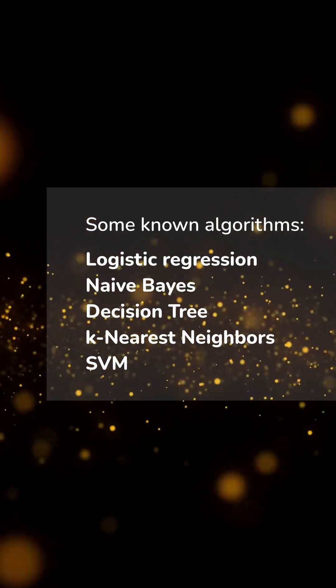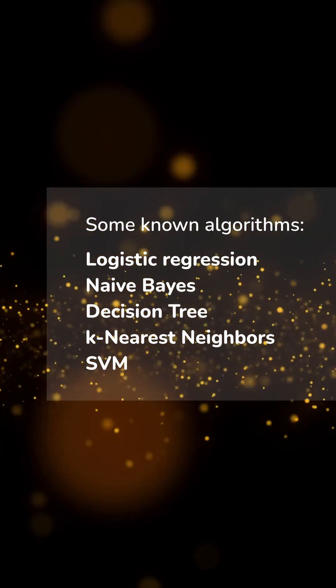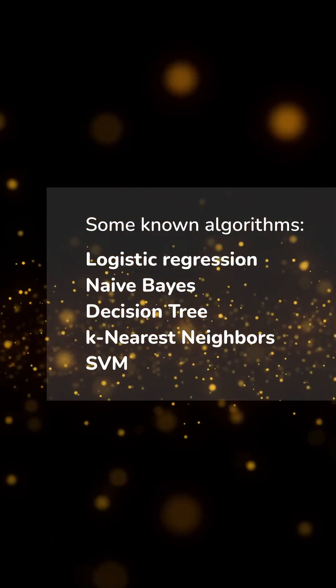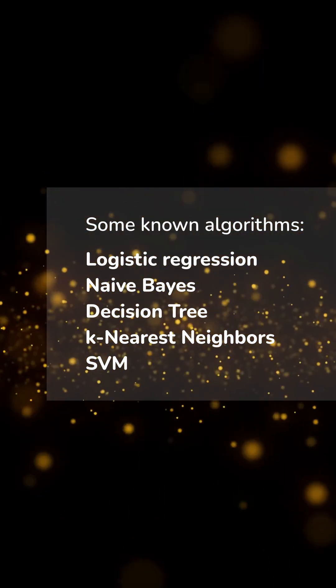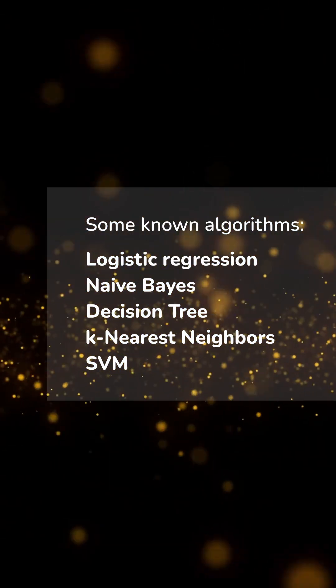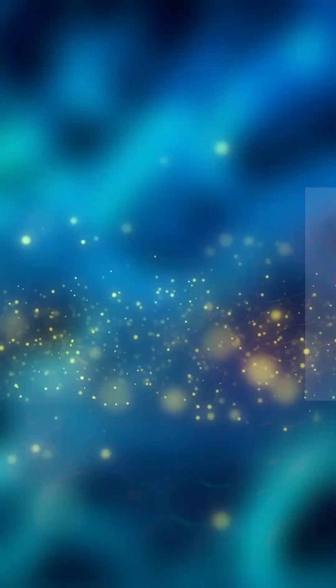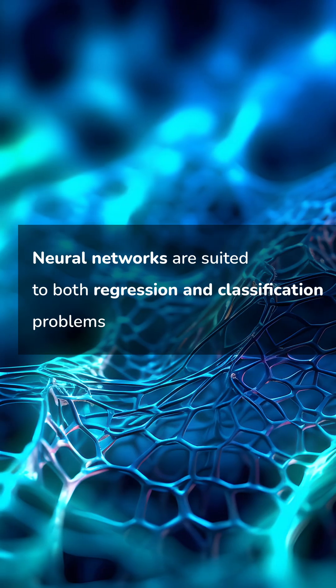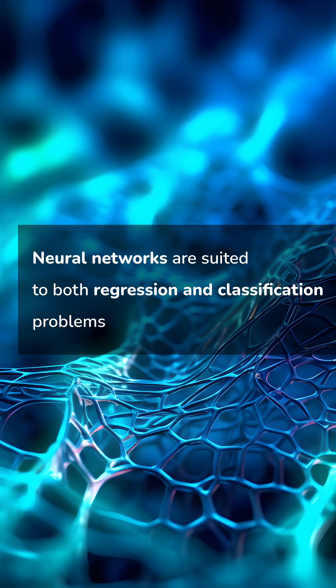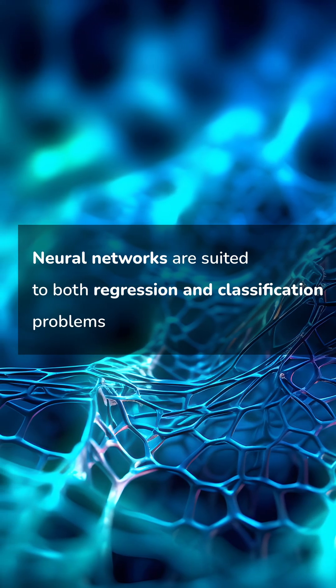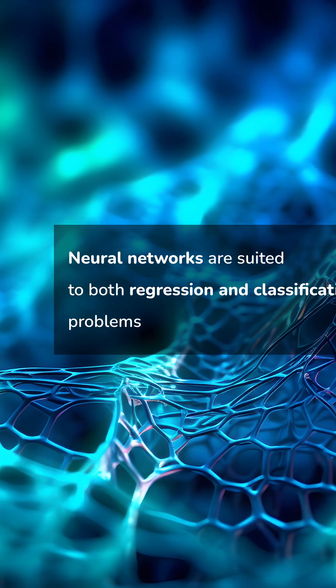The best known algorithms are logistic regression, naive Bayes, decision tree, k-nearest neighbors, and SVM. Neural networks are suited to both regression and classification problems.